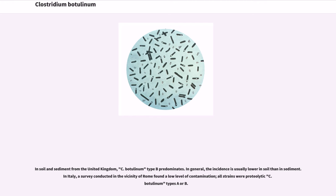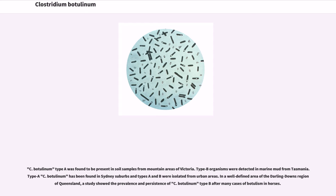In soil and sediment from the United Kingdom, C. botulinum type B predominates. In general, the incidence is usually lower in soil than in sediment. In Italy, a survey conducted in the vicinity of Rome found a low level of contamination; all strains were proteolytic C. botulinum types A or B. C. botulinum type A was found to be present in soil samples from mountain areas of Victoria. Type B organisms were detected in marine mud from Tasmania. Type A C. botulinum has been found in Sydney suburbs and types A and B were isolated from urban areas. In a well-defined area of the Darling Downs region of Queensland, a study showed the prevalence and persistence of C. botulinum type B after many cases of botulism in horses.